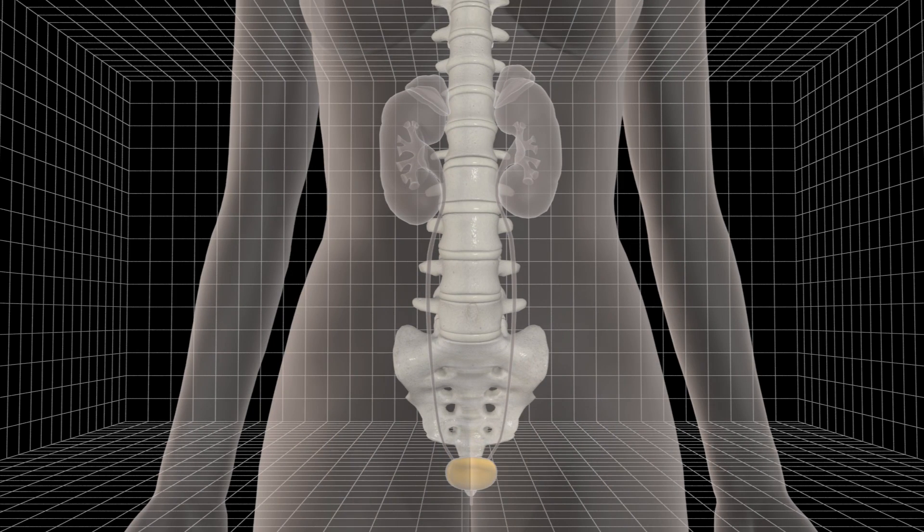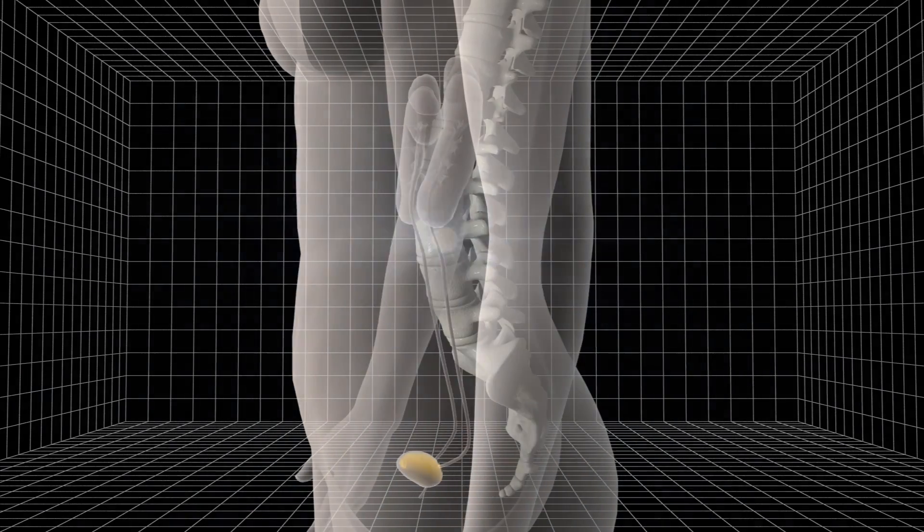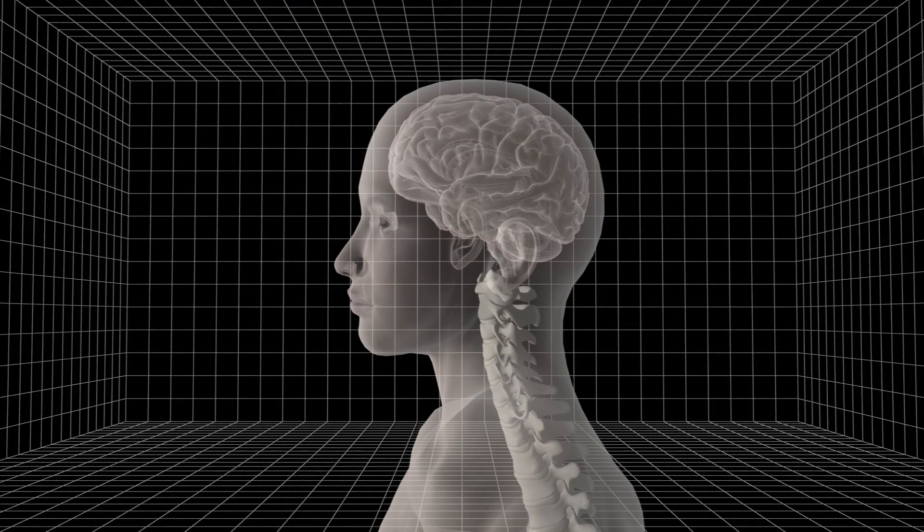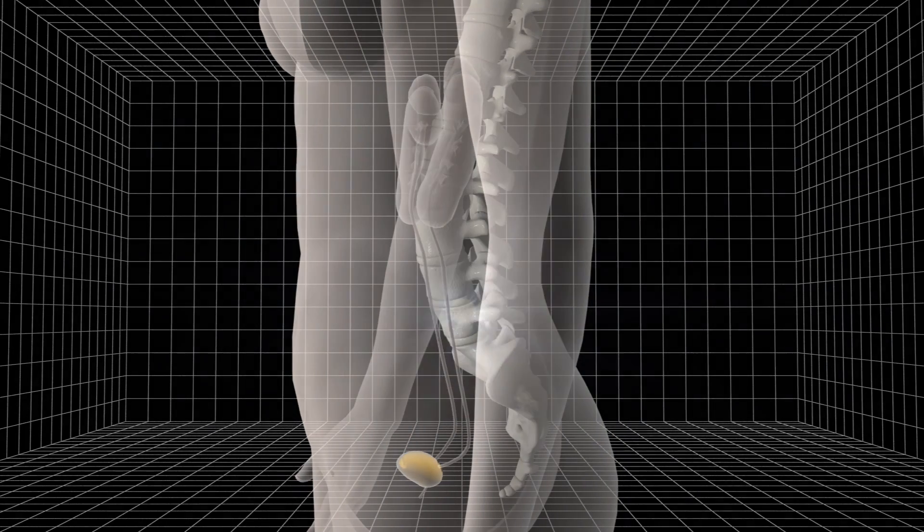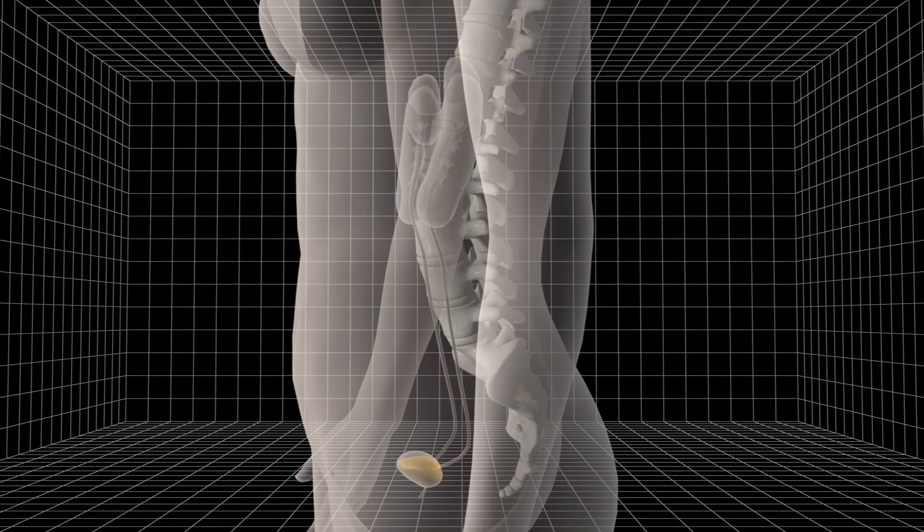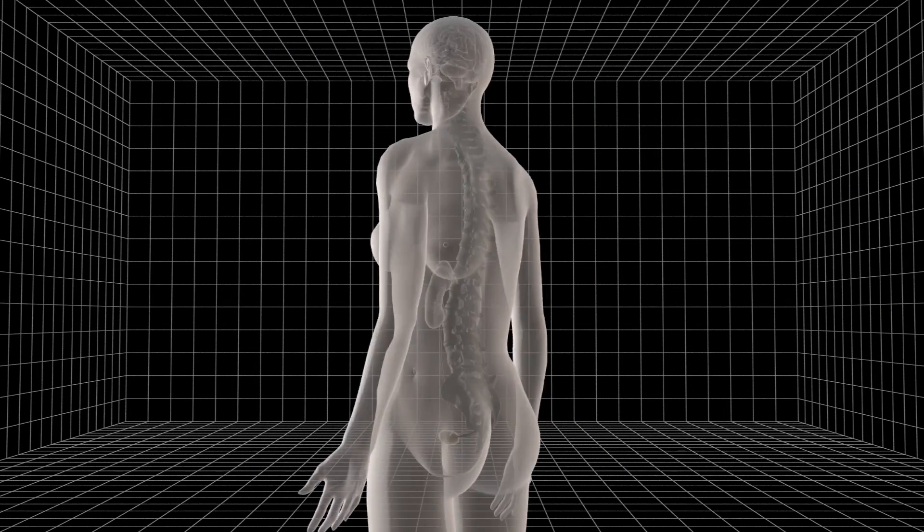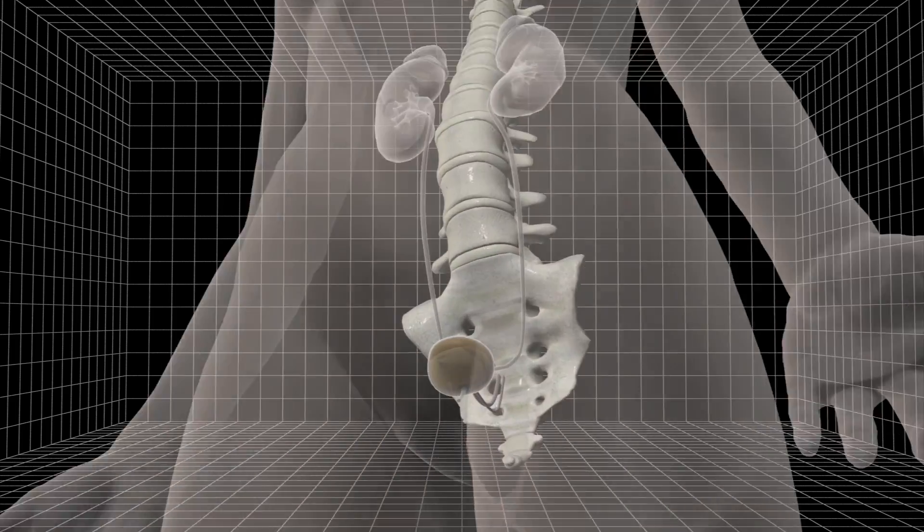Normally the bladder signals the brain through the spinal cord when it reaches capacity. Voluntary urination occurs when the brain signals the bladder to contract. But a damaged spine cannot deliver signals between the bladder and the brain.